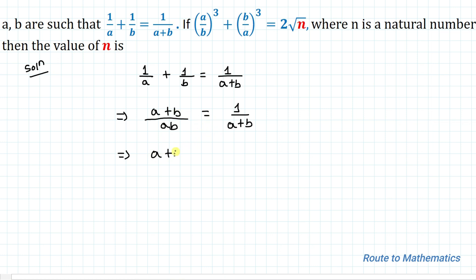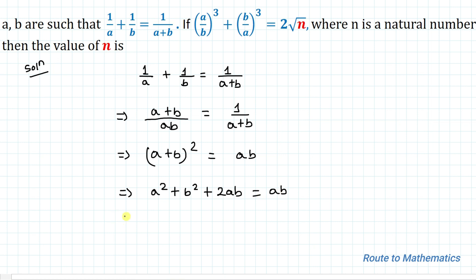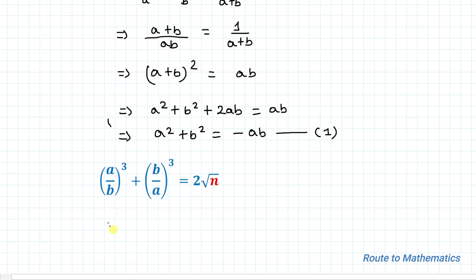Again we cross multiply, and what we get is (a+b)² = ab. Now we apply the algebraic identity: (a+b)² = a² + b² + 2ab = ab. Taking 2ab to the right-hand side, we get a² + b² = -ab. Let's call this equation 1.